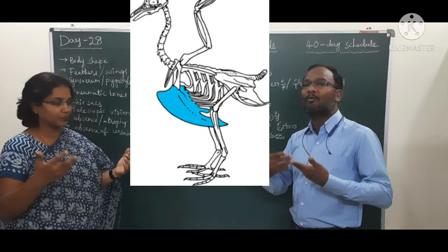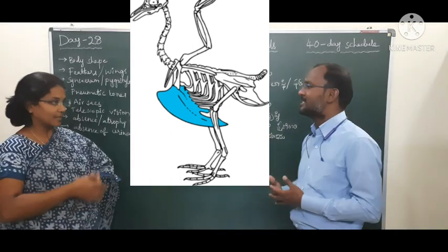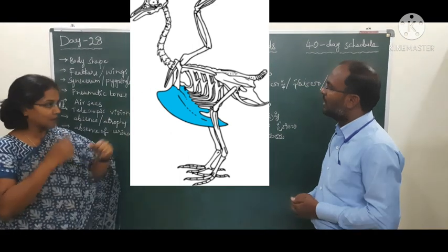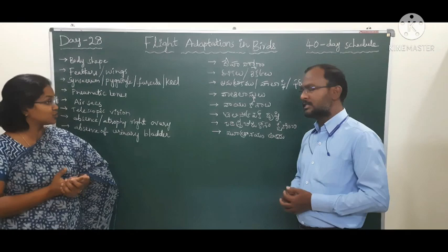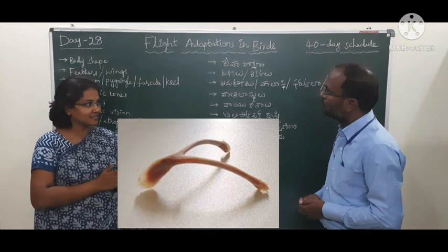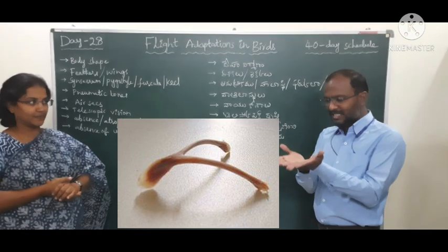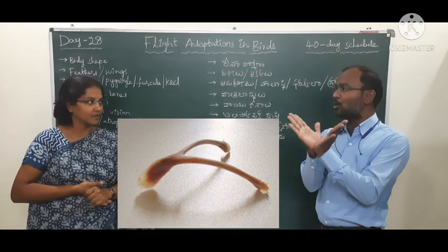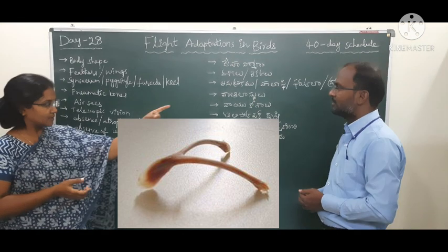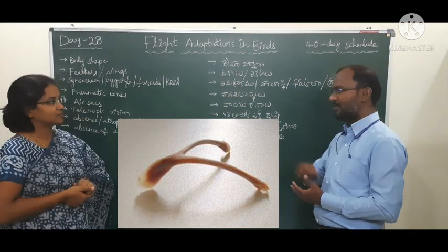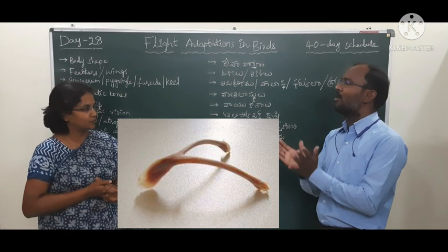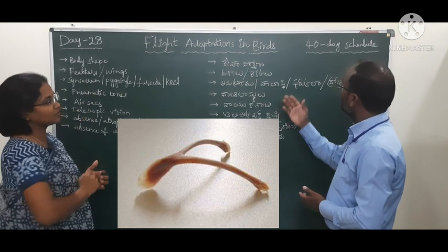Next we come to the furcula, or merry-thought bone — a V-shaped bone which gives the boat shape and strength to the body. The furcula is formed by the fusion of clavicular and interclavicular bones merging together.